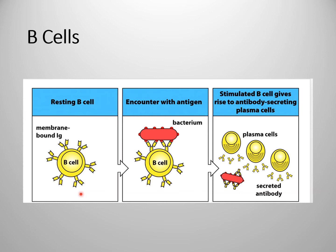B cells become activated when an antigen binds to the Fab portion of the membrane-bounded antibody. For example, bacteria bound to the Fab portion of the B cell receptor. This binding of antigen with the B cell receptors triggers a series of responses that results in stimulation of the B cell to give rise to antibody-secreting cells called plasma cells, as well as memory cells which provide long-term immunity.